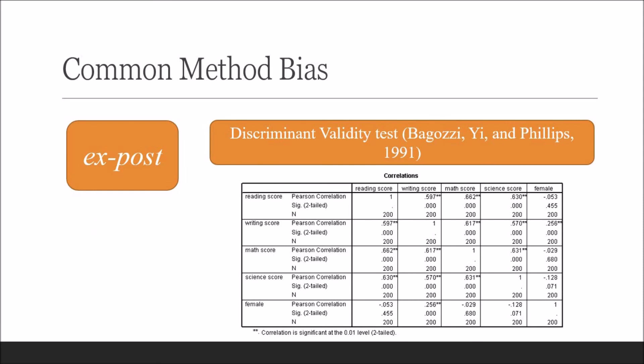In the next correlation matrix, all correlations between variables are less than 0.90. Therefore, we will conclude that common method bias is not adversely inflating the internal consistency of study variables.